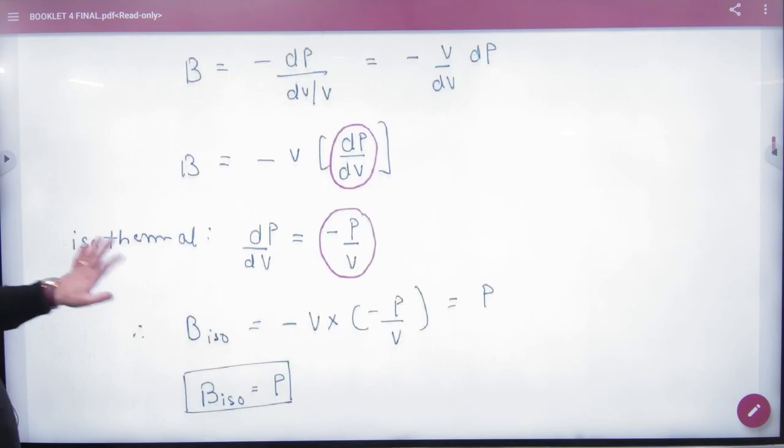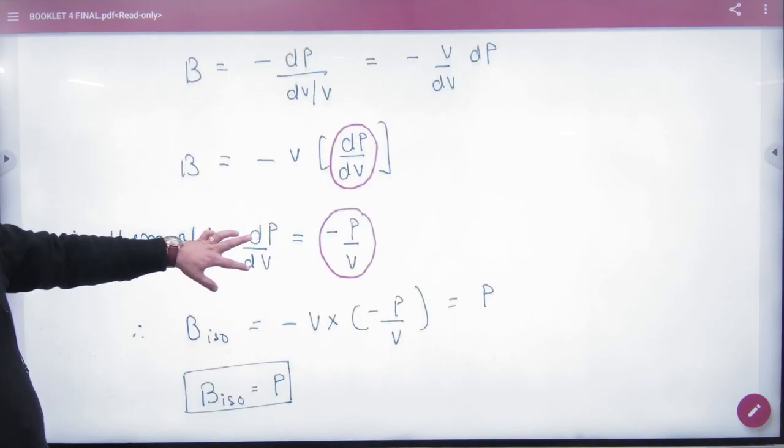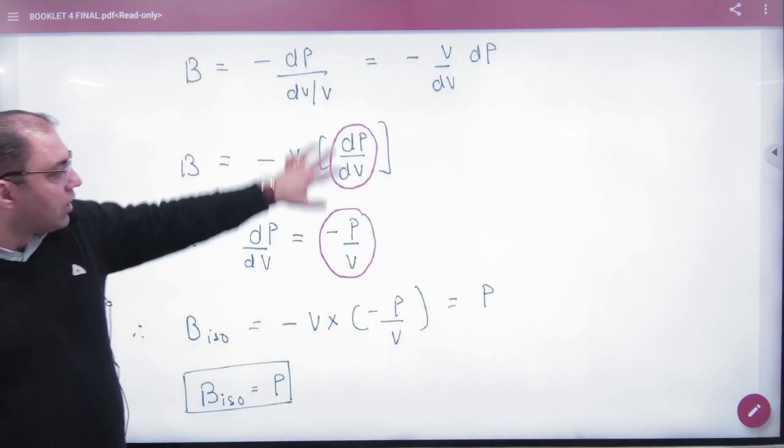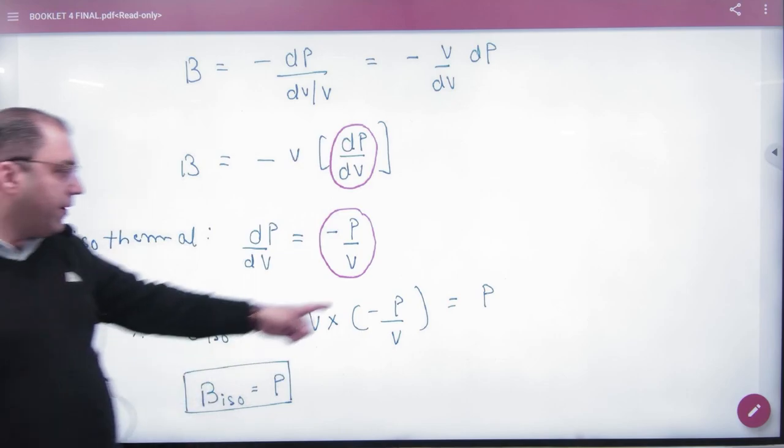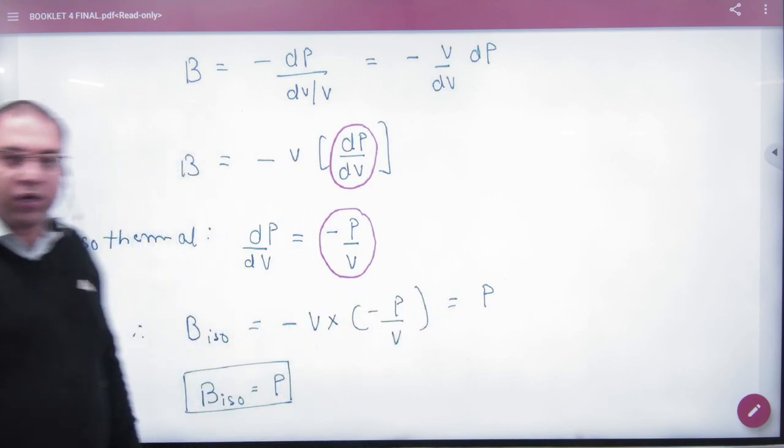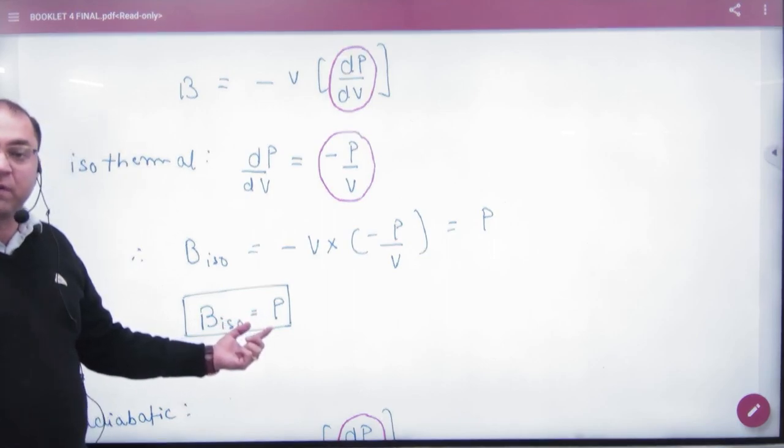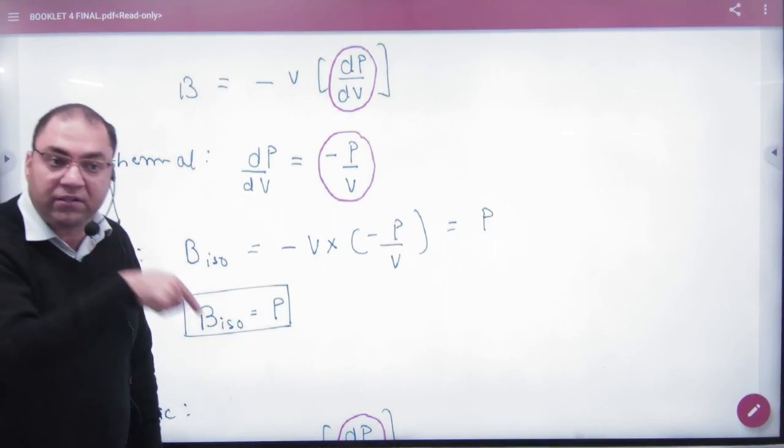Now, I have made you a result. Isothermal, what is dp by dv slope? Minus p by v. Put it here. Minus minus vv cancel, then p. So, write a formula. Bulk Modulus for an isothermal process is always equal to instantaneous pressure.